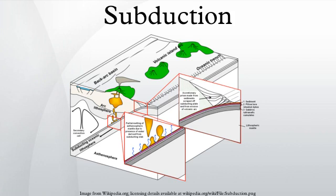The subducting basalt and sediment are normally rich in hydrous minerals and clays. Additionally, large quantities of water are introduced in the cracks and fractures created as the subducting slab bends downward.